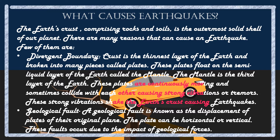A geological fault is a displacement of the original position of rock — the displacement can be horizontal or vertical. These faults occur due to geological forces, specifically tension force. Tension force pulls one whole crustal block in two opposite directions. Most of the pressure comes on the middle part, and over time the middle part becomes really weak and breaks apart, sending shock waves that cause earthquakes.